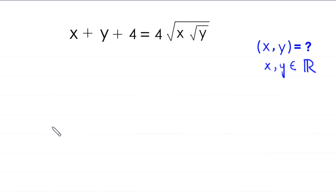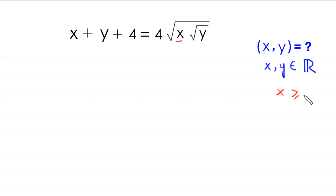Hello everyone, you are welcome. We will solve this algebra equation: x plus y plus 4 is equal to 4 times square root of x times the fourth root of y. Our job is to find all possible values of x and y such that x and y are real numbers. Since x is under a square root, x must be greater than or equal to 0, and similarly y must be greater than or equal to 0.